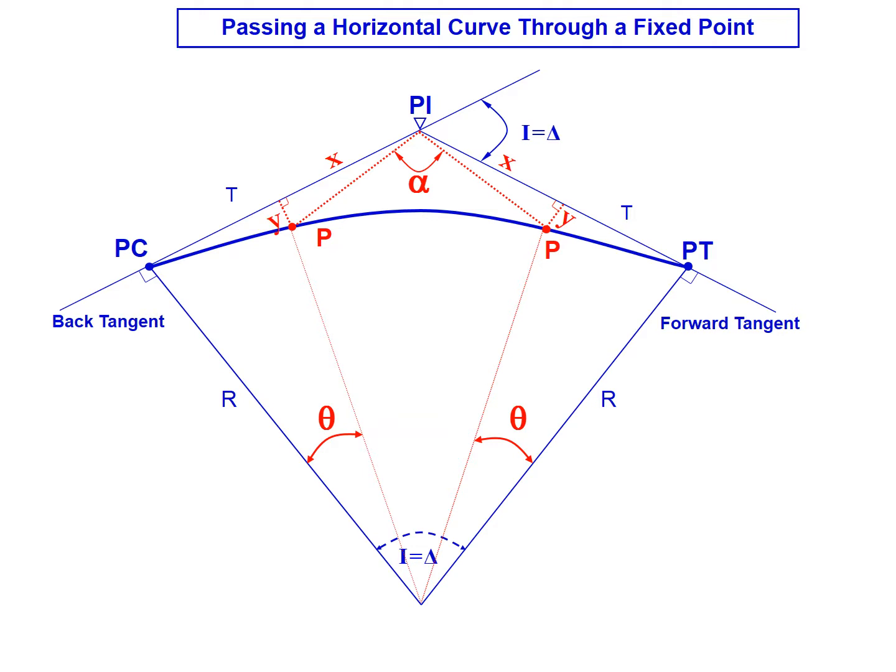We also have an angle theta that is bounded by the point P, moving the distance along the radius to the center of the curve. That's one of the bounds of theta. And then the other bound is the radial length from the PC or the PT to the center of the curve. So those are the key points along the horizontal curve that we'll use in our calculations to define how we're going to pass a horizontal curve through a fixed point.